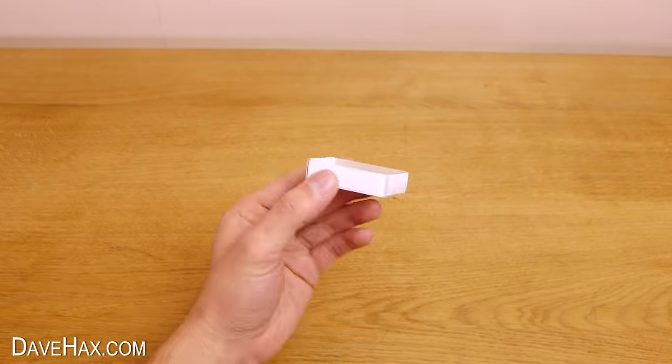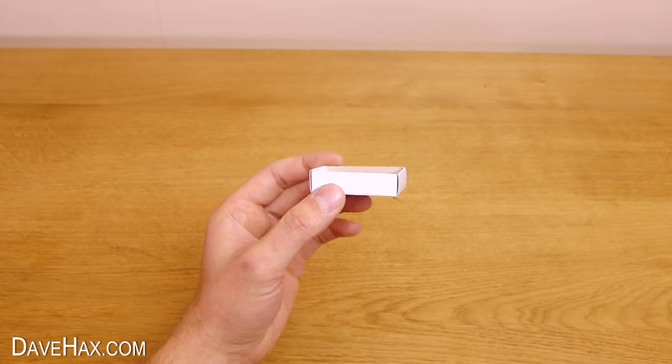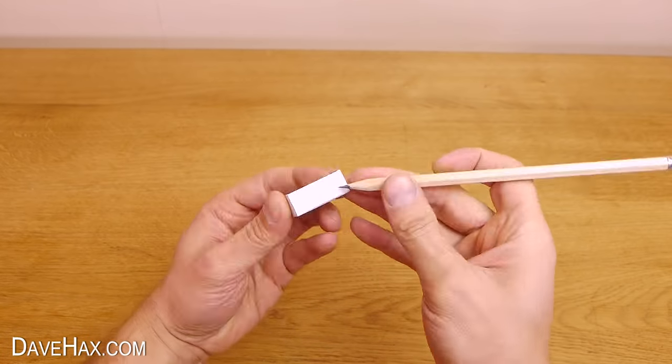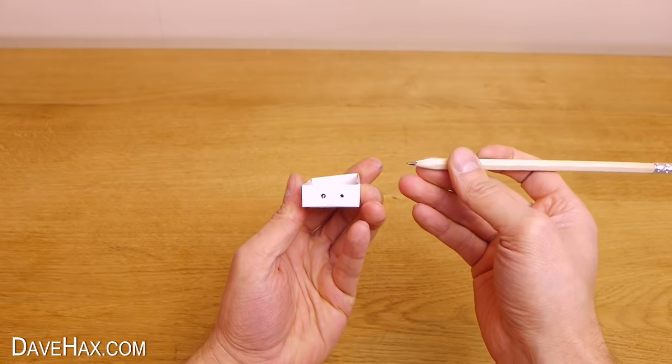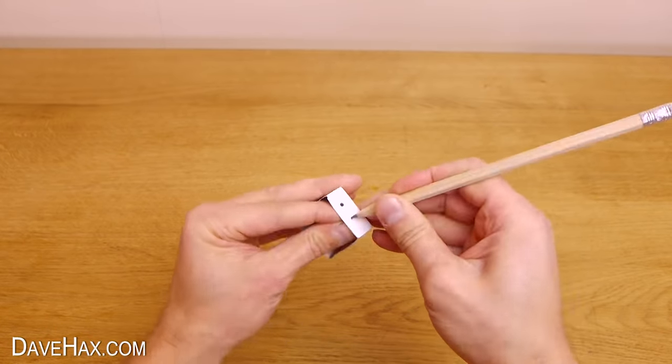Start by taking an empty matchbox and remove the drawer. Then, using a sharp pencil, pierce two holes in the end of the drawer, about a centimeter apart, like this. Turn it around and do the same on the other side.